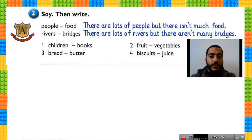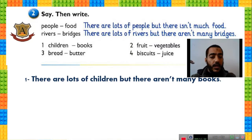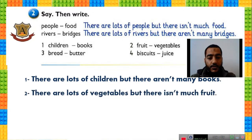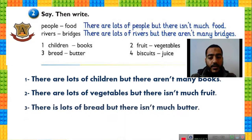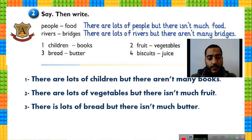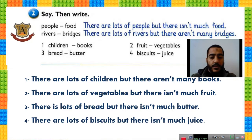Number one: children and books — both plural. There are lots of children, but there aren't many books. Number two: fruit is uncountable, vegetables are countable. There are lots of vegetables, but there isn't much fruit. Number three: bread and butter — both uncountable. There is lots of bread, but there isn't much butter. Number four: biscuits are plural, juice is uncountable. There are lots of biscuits, but there isn't much juice.